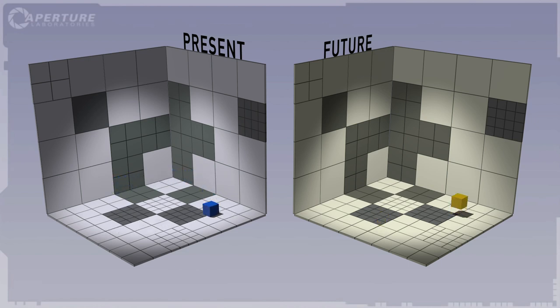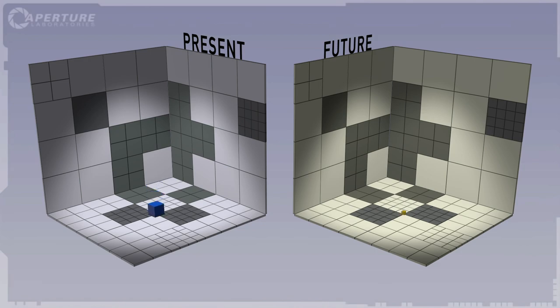This future version of the cube can be moved freely. If you change the destiny of an object in the present, the future version of that object will be affected as well.